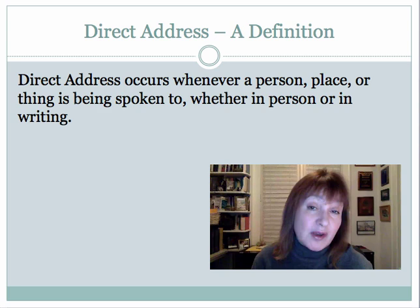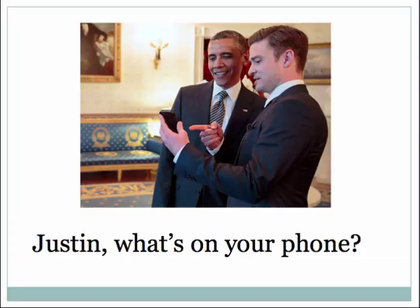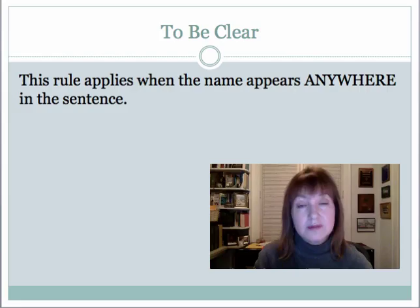Let's start talking about direct address by going over a definition. Direct address occurs whenever a person, place, or thing is being spoken to, whether in person or in writing. It'll help to see some examples. "Justin, what's on your phone?" In this imaginary conversation taking place in the White House, President Barack Obama is asking this very important question of Justin Timberlake, and you can see that immediately after the direct address, we put a comma.